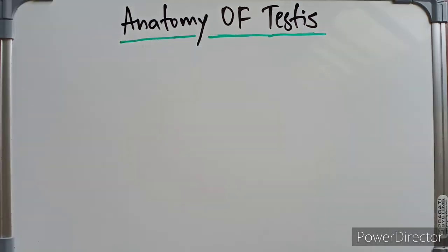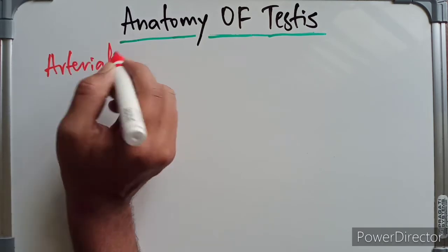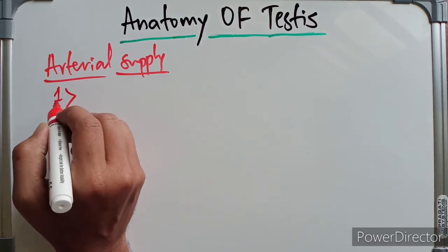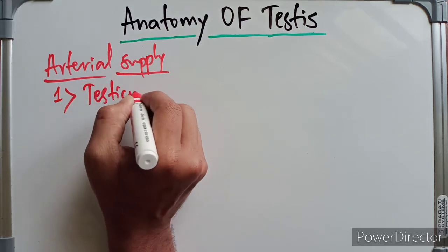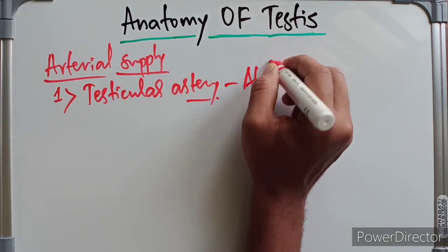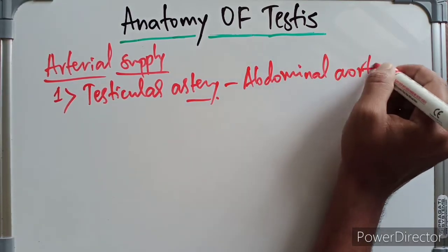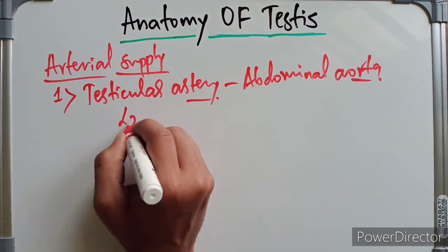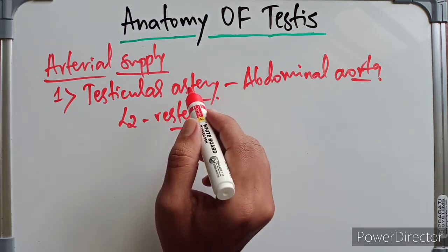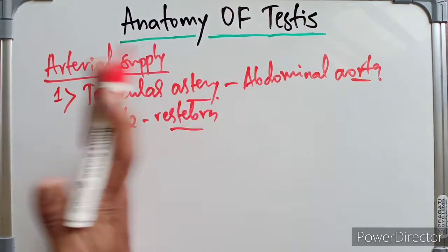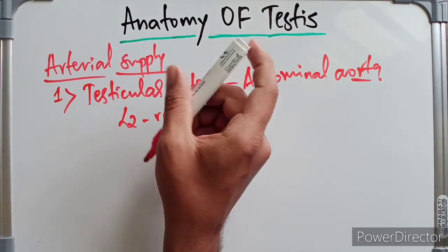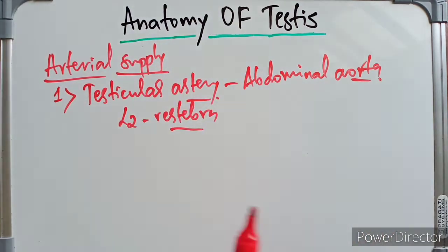Coming to the arterial supply, the testis is mainly supplied by the testicular artery. The testicular artery arises from the abdominal aorta in the abdomen at the level of the L2 vertebra. It passes downward and laterally to enter the deep inguinal ring, then traverses through the inguinal canal within the spermatic cord to reach the testis.